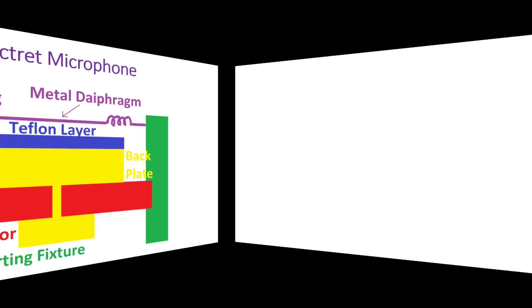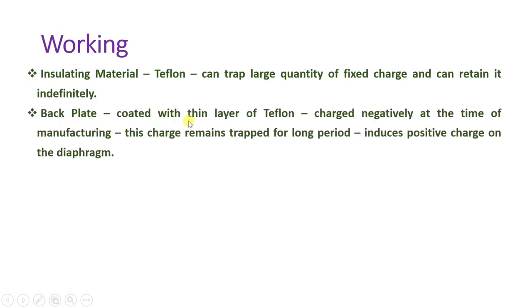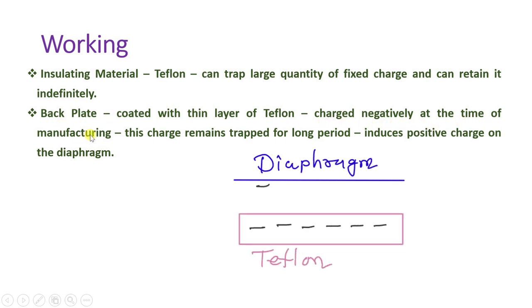Now let us see the working. The insulating Teflon material is connected with the back plate, and it can trap a large quantity of fixed charge and retain it for a longer time. We don't need any external bias because of this Teflon material. The back plate is coated with a thin layer of Teflon that is negatively charged at the time of manufacturing, and this charge remains trapped for a longer period.